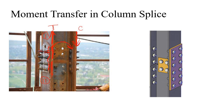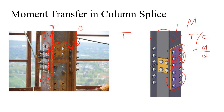To design the splice, consider the moment and based on the depth of the section find out the tension or compression. Then design all the bolts for that tension. For example, if the tension is T and you are using six bolts on each side, the required shear capacity of each bolt is simply T divided by 6 — as simple as that.